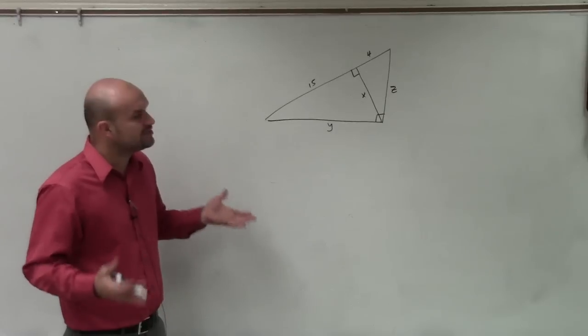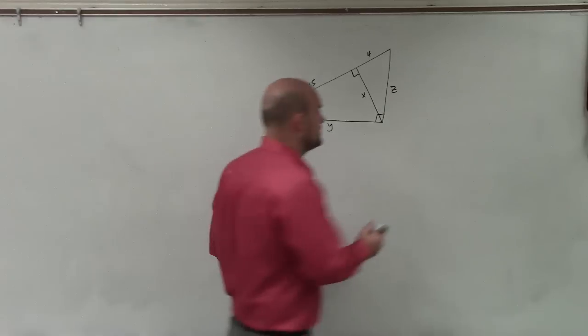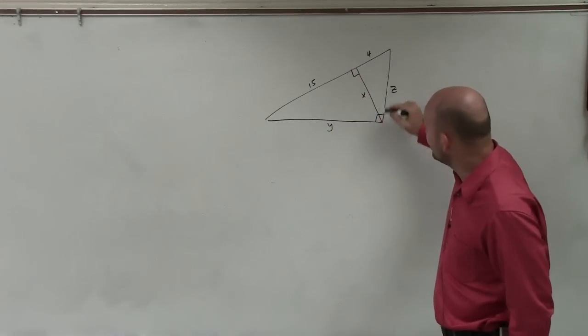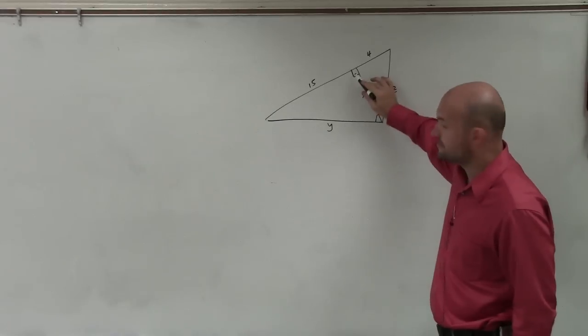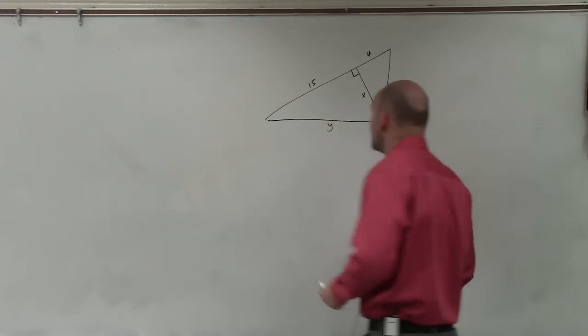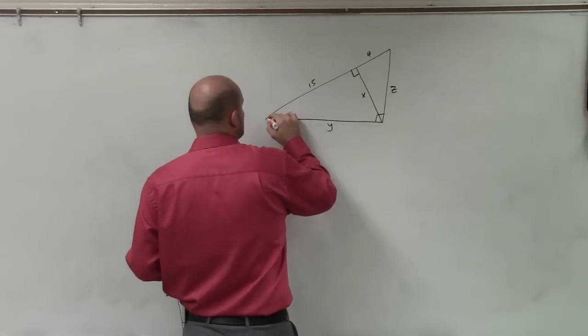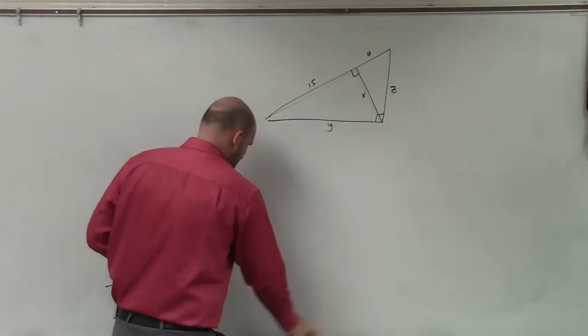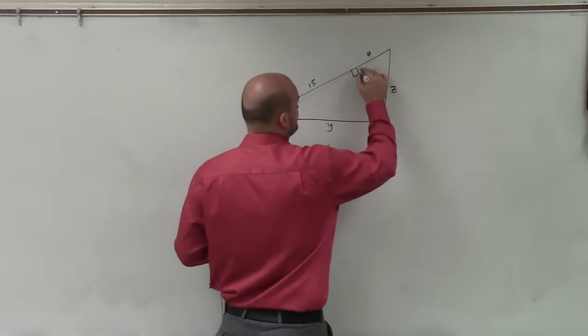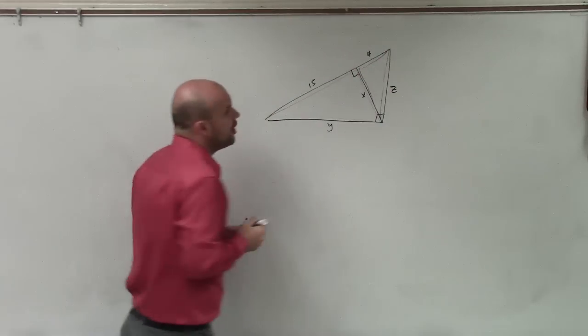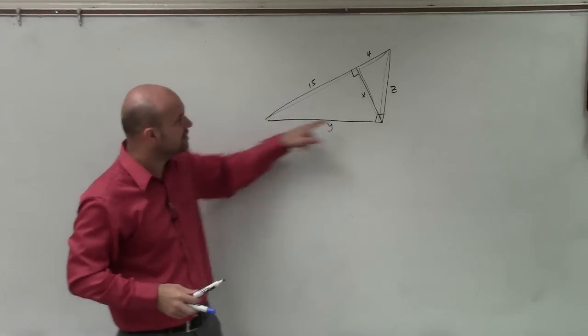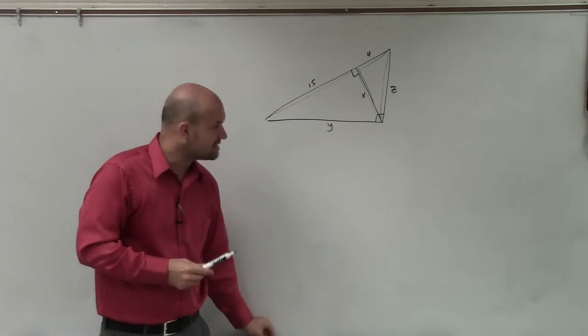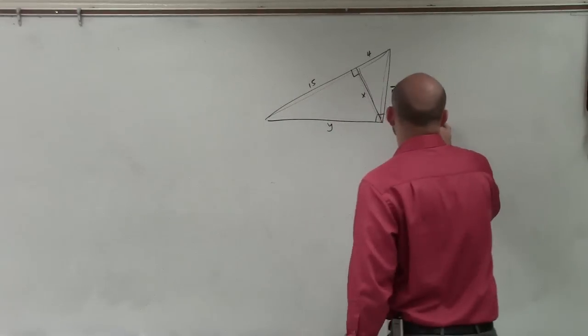What I would recommend is just redrawing all the triangles. So remember, when we have a right triangle and I draw the altitude, which is that straight line that makes a 90 degree, I have now created two more triangles. And remember, those three triangles are all similar to the big triangle. So what I'm going to do is redraw all of them separately.